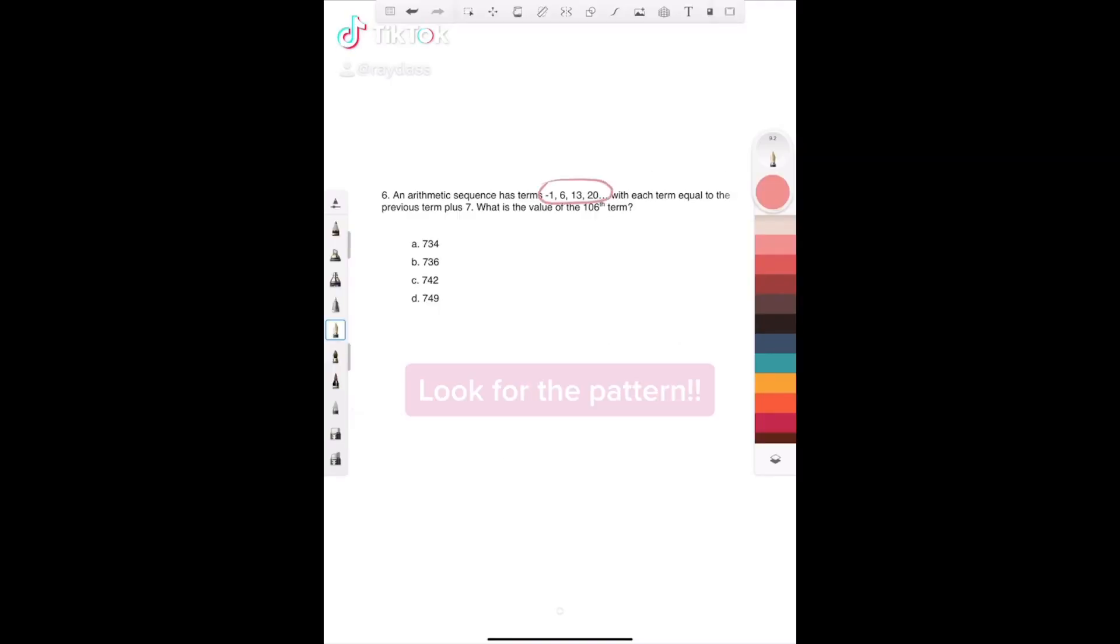These are our terms, and it says each term is equal to the previous one plus 7. It's asking for the 106th term. We have negative 1, 6, 13, and 20.